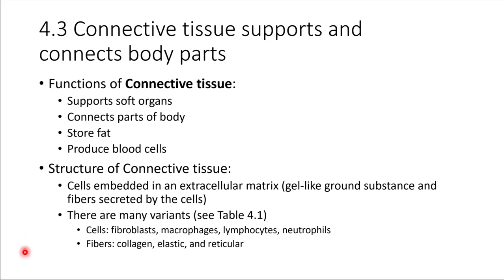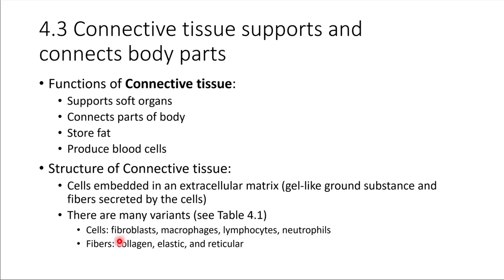Types of cells we might see present in connective tissue include fibroblasts, which are the main cell types. We also find other cell types: macrophages, lymphocytes, and neutrophils. These are all parts of the immune system and they tend to hang out in the connective tissue as well. These cells contribute to the extracellular matrix and here are some of the fiber types they might produce: collagen, elastic fibers, and reticular fibers. We'll take a look at these in more detail on the next slide.